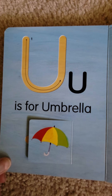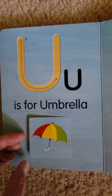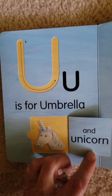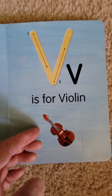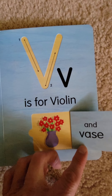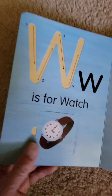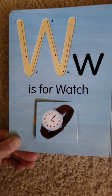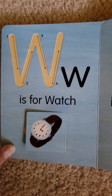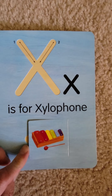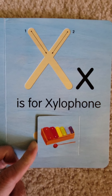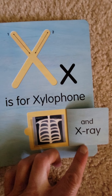U is for Umbrella and Unicorn. V is for Violin and Vase. W is for Watch and Whale. X is for Xylophone and X-Ray.